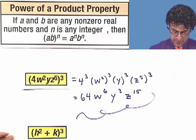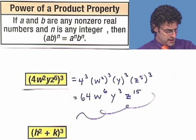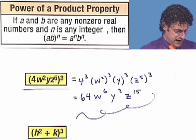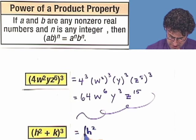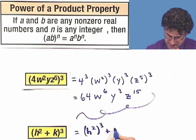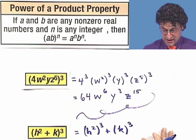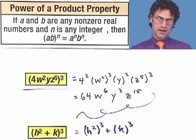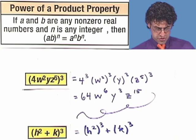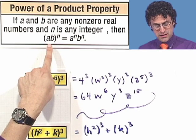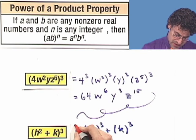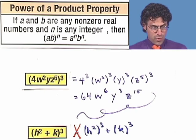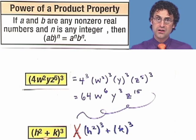How about this last one? The quantity h squared plus k, all cubed. Now, it's tempting to say this equals h squared cubed plus k cubed — but that's really, really wrong. It's one of the classic mistakes in algebra, because this formula applies to a product raised to a power. This is actually a sum, and there is no such rule. This is actually false.